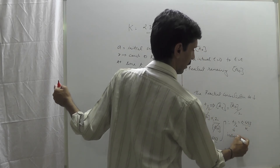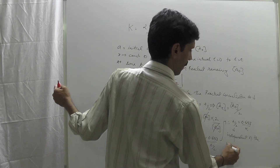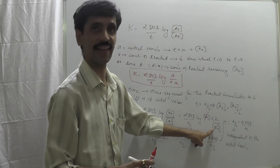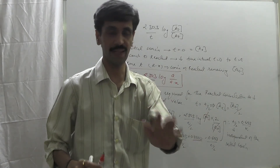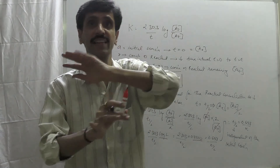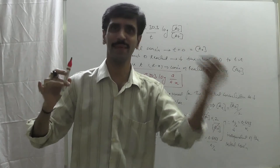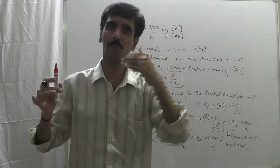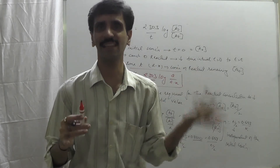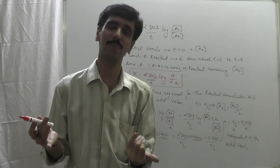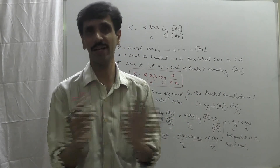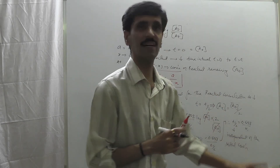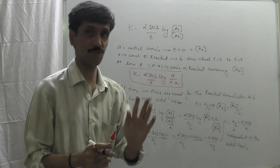Therefore T half equals 0.693/K. This means the half-life for a first order reaction is independent of the initial concentration, since A0 cancels out entirely from the expression. This is the important characteristic of first order reactions — the half-life does not depend on the initial concentration.